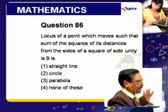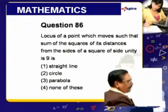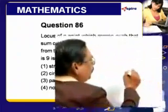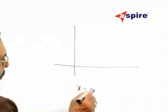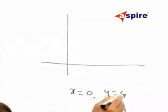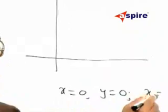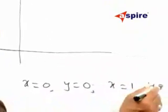Without loss of generality, we can assume the sides of the square to be x=0, y=0, x=1, and y=1.